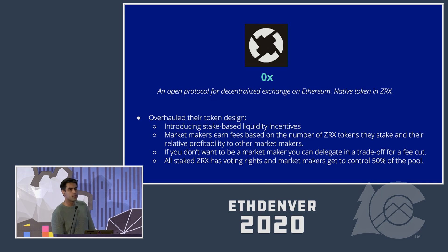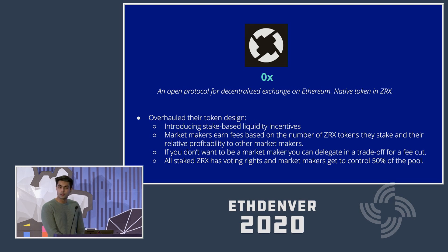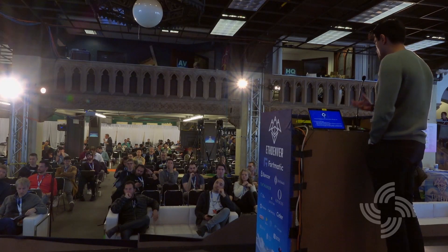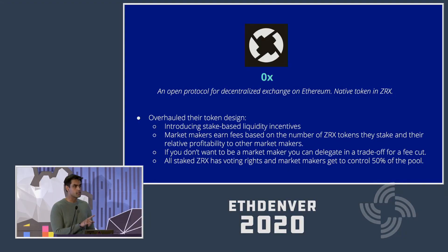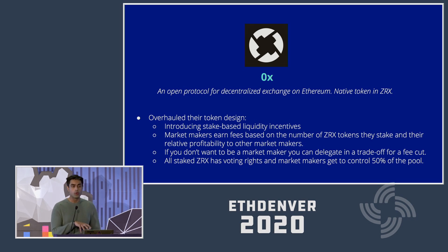Then you've got 0x. I like 0x a lot — they've been around for a long while. I'd argue they're one of the few protocols that have put their hands up and said maybe our token model doesn't work, but we can change it and adapt it to the newer infrastructure layer we're building. They completely overhauled their token design by introducing stake-based liquidity incentives: if you're a market maker, you can earn fees depending on the number of ZRX tokens you stake and your general profitability relative to other market makers. If you don't want to be a market maker, you can delegate your tokens — but it comes at a cost, because if you delegate, the market makers can control around 50% of the governance attributes that come with that.